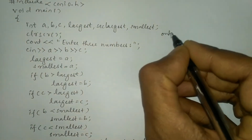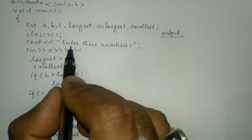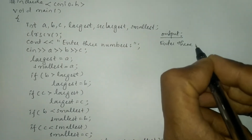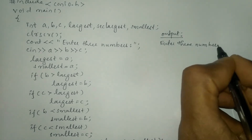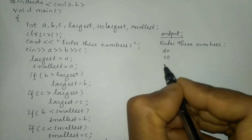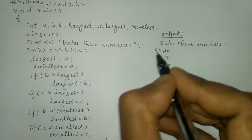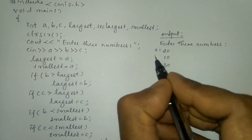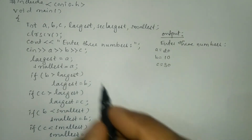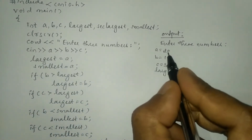Now let us take an example. Once we compile and run this program it will ask the user to enter three numbers. I'm going to enter: 20, 10, and 30. So the first number 20 is assigned to variable a, the second number 10 is assigned to variable b, and the third number 30 is assigned to variable c.